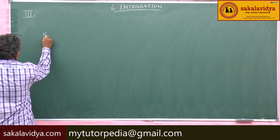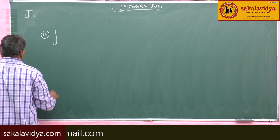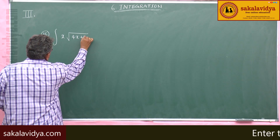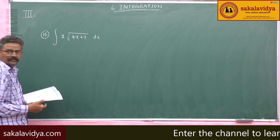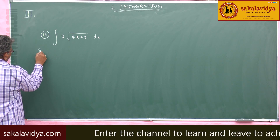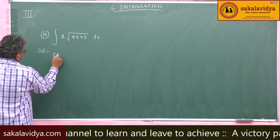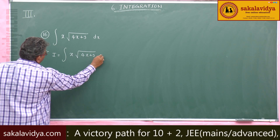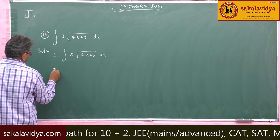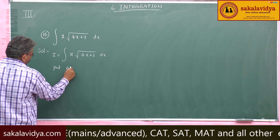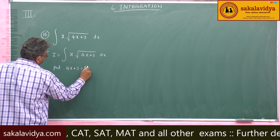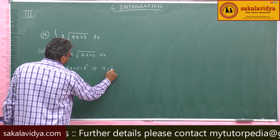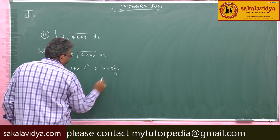16th problem: Evaluate integral of x · √(4x + 3) dx. Let I equal integral of x · √(4x + 3) dx. Put 4x + 3 equal to t², which is more convenient. Then x equals (t² minus 3) by 4.